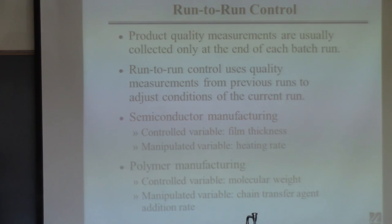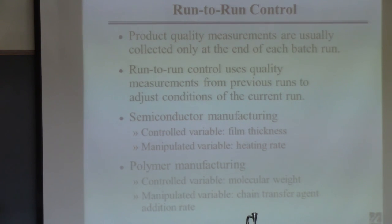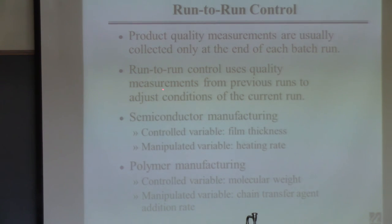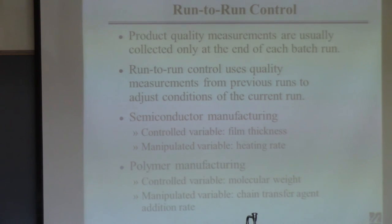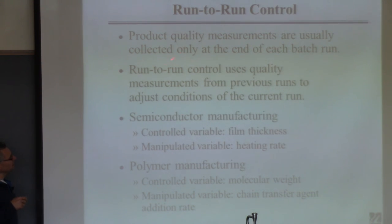Run-to-run control uses quality measurements from previous runs to adjust subsequent batches. If you're making a polymer and the molecular weight is higher than the customer wants, the next batch you try to make the molecular weight less — by adjusting handles like the chain transfer agent or hydrogen addition rate. In industry, because this has been done for many years, they actually have recipes: if you want to reduce molecular weight by this amount, change the hydrogen feed rate by this amount. It's archaic compared to real-time control, but it's often the best you can do.